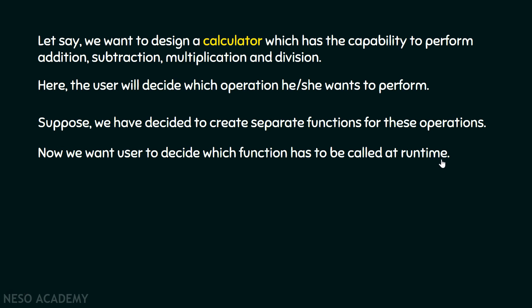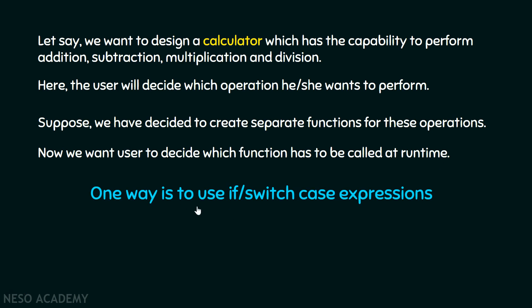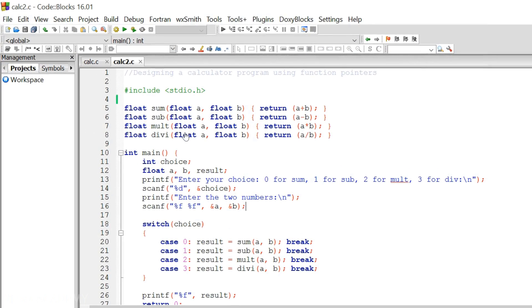If the user decides to add two numbers, then the addition function has to be called. One way is to use if or switch case expressions. The user will input some number or character, and according to that choice, we will decide which function has to be called. Let's see a calculator program that uses switch case expressions to handle all these operations: addition, subtraction, multiplication, and division.